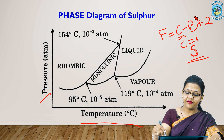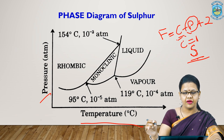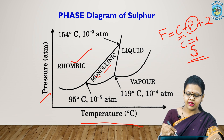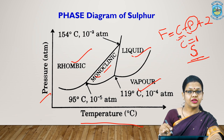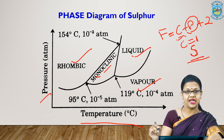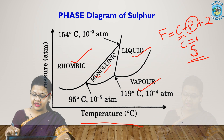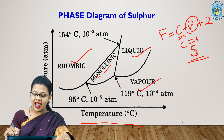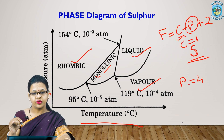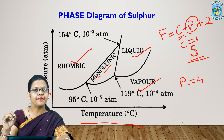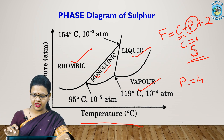When we apply the phase rule F = C − P + 2, for this example our value of C will remain 1 because it is a one component system. But the value of P, that is the phase, will differ because sulphur exists in four forms: rhombic, monoclinic, liquid sulphur, and vapour sulphur. These are all four different states which are separable and identifiable. Therefore, the value of P can be 4, 3, 2, or 1 depending on how many phases are coexisting at a particular condition of pressure and temperature.